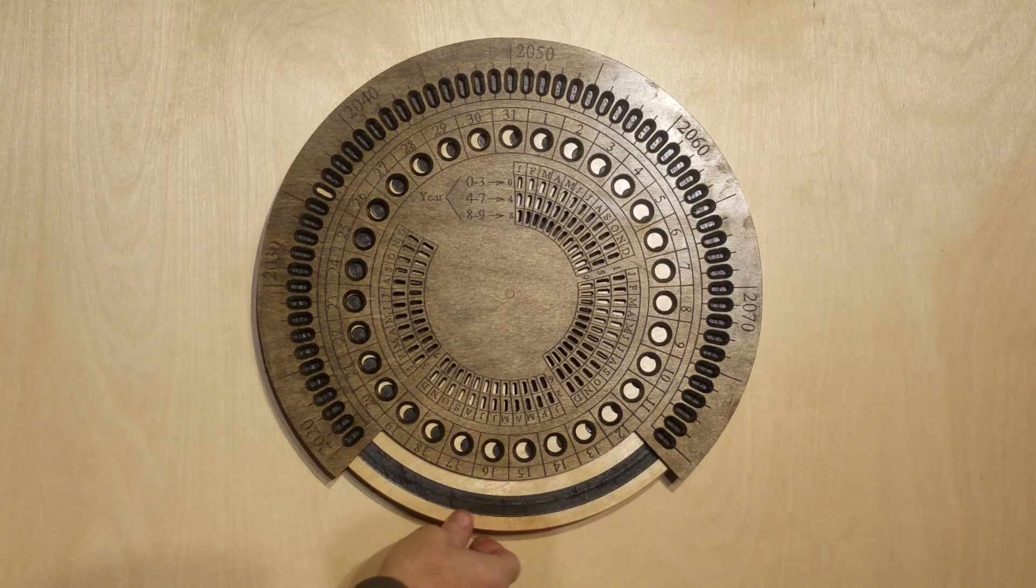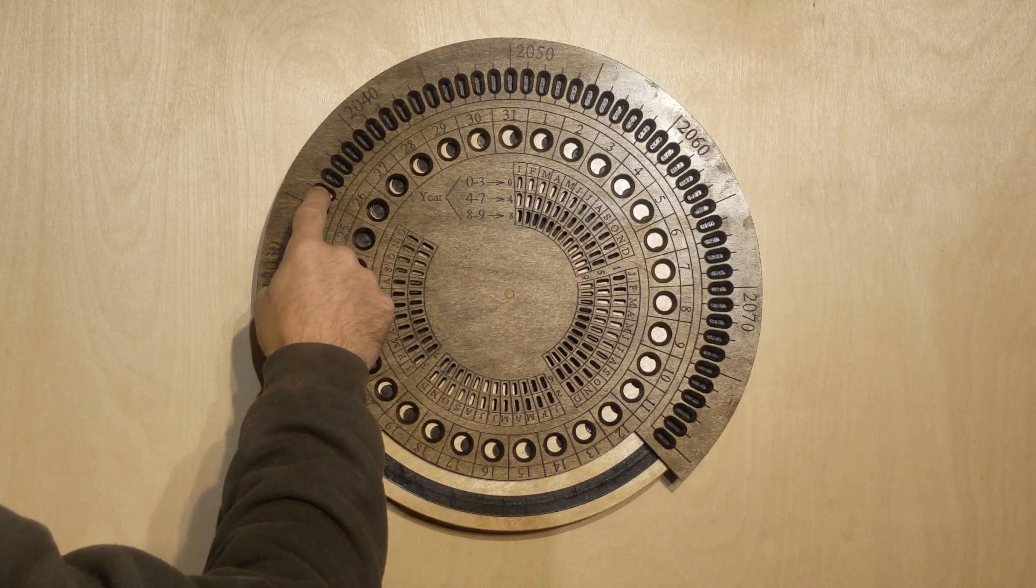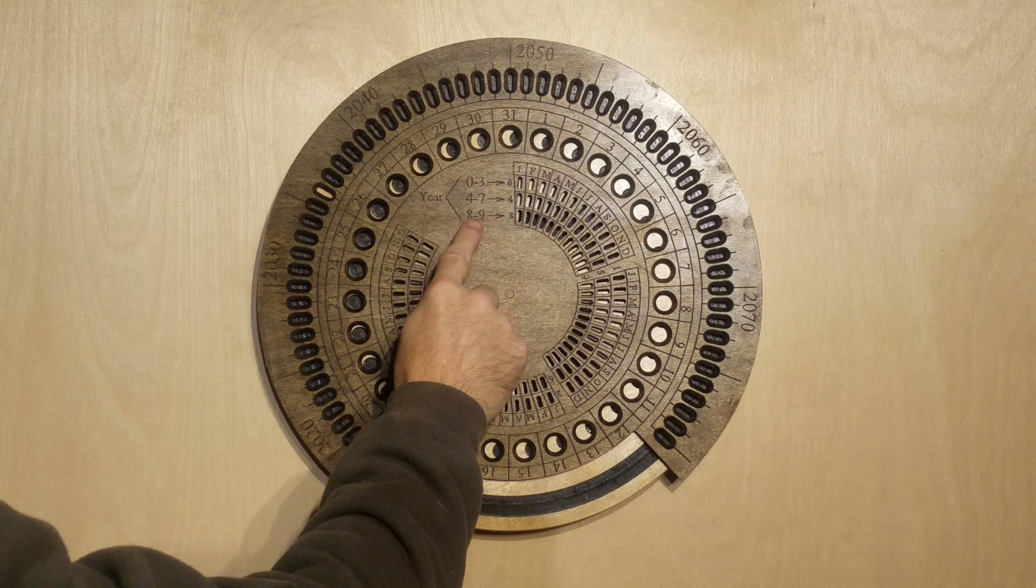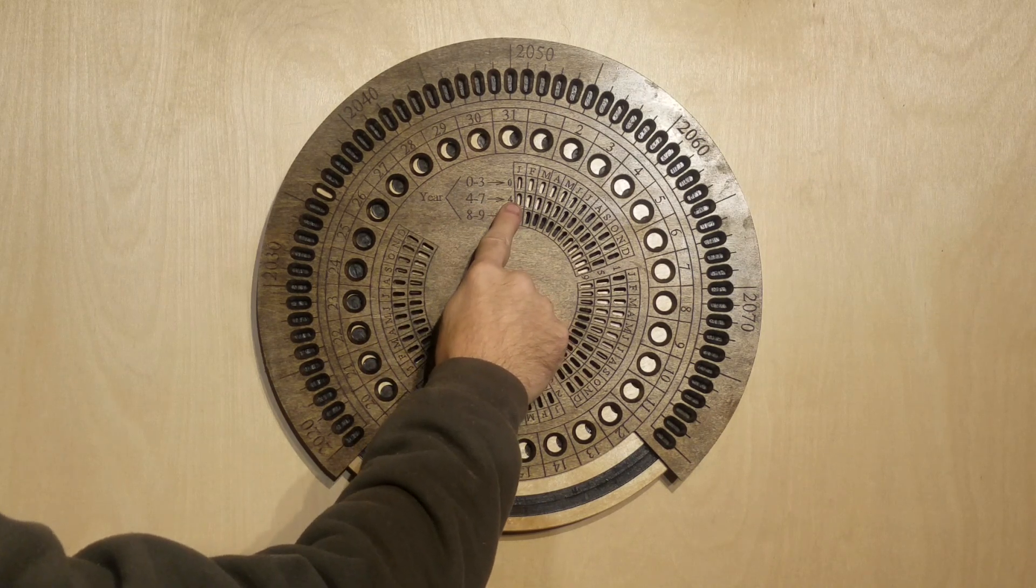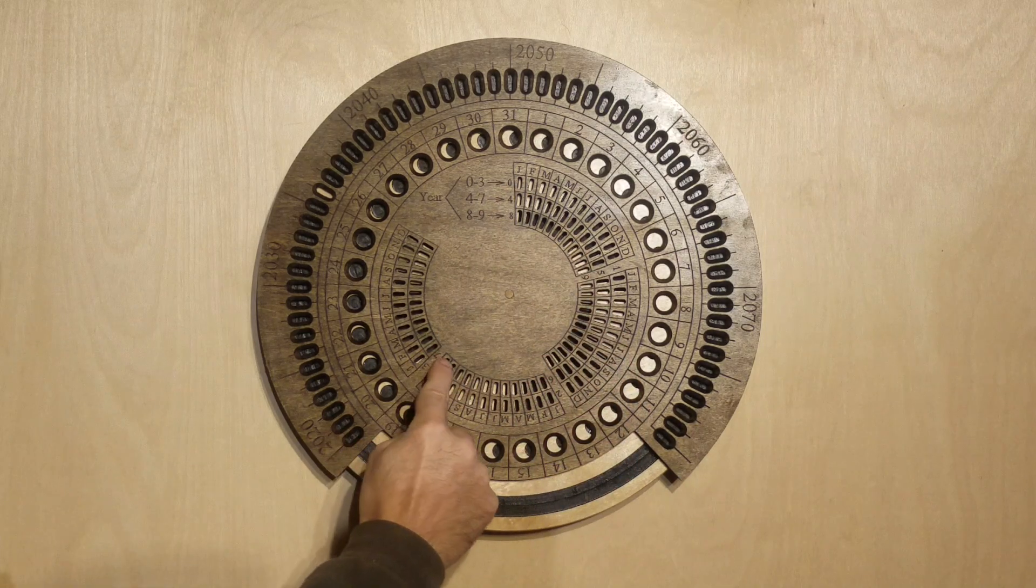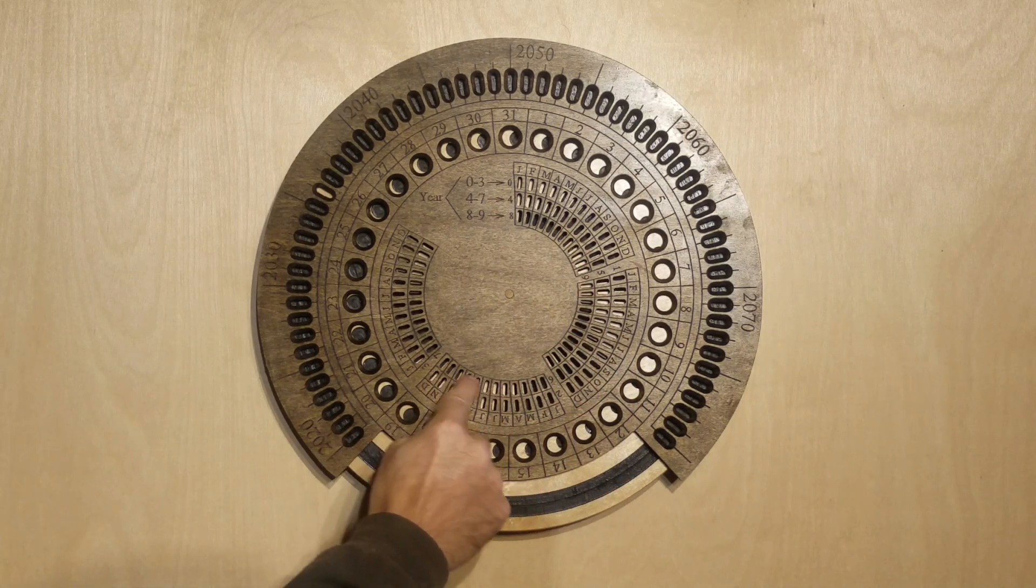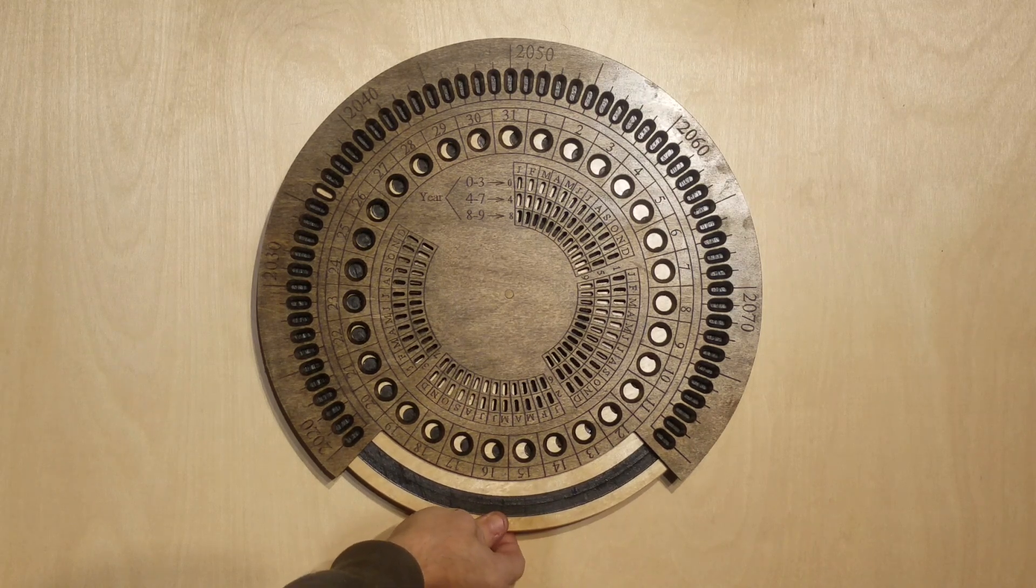...and then you go to the inner dial here, and according to the last number in that year, you pick which row you're going for, so that would be four through seven. So starting at four here, you go four, five, six...